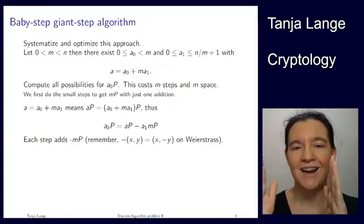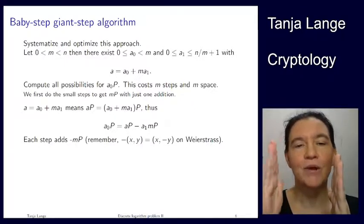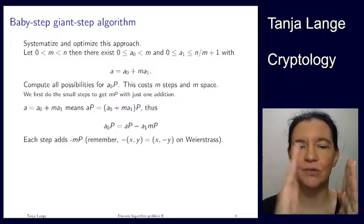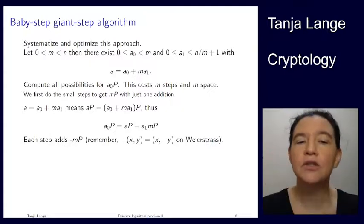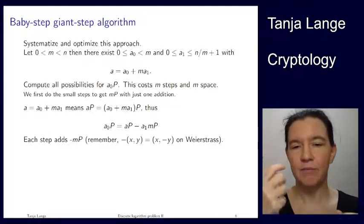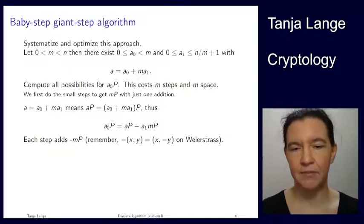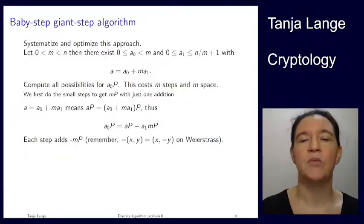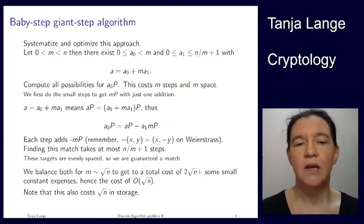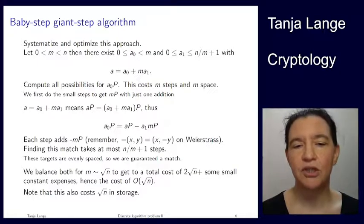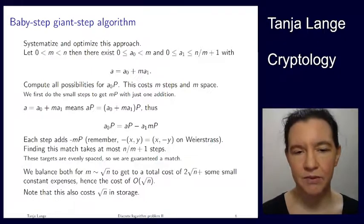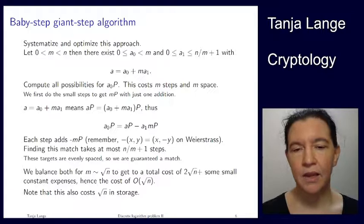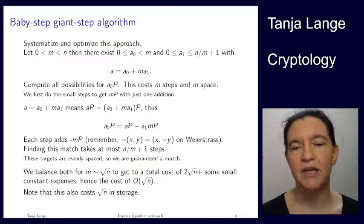And then since I have A written as A0 plus m times A1, I can solve this around. So I'm now having A0 times P on one side and the target minus A1 times m P on the other side. So it's slightly different from what I had on the previous page, that I have a minus instead of a plus. So instead of adding m times P, I'm adding minus m times P. But remember we are on elliptic curves. And so taking the negative of a point is just flipping the sign on the y coordinate. So this doesn't actually cost me anything. I have computed m times P. I compute just the negative of the y coordinate. And then I have minus m times P. And this is what we call the giant steps. The baby steps are like this part, which is doing one P at a time. So very small steps. This is doing m times P. Much bigger steps at a time.